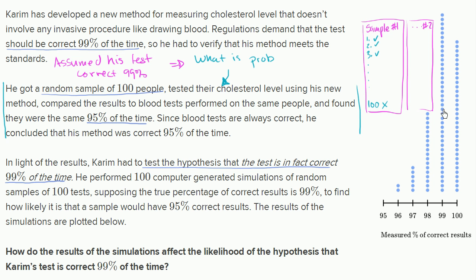Each sample corresponds to a dot on the chart. If the test ran again and got 99 correct results and 1 incorrect, it would be another dot. In one of the samples of 100 virtual people, since there's a 99% chance of getting a correct result, all 100 people got a correct result — that would stack up at the 100% mark on the chart.